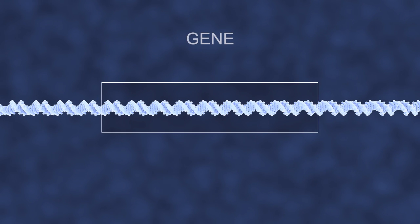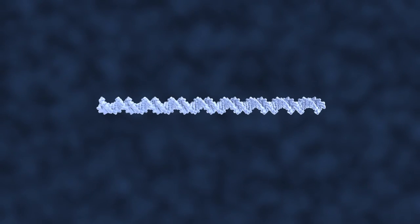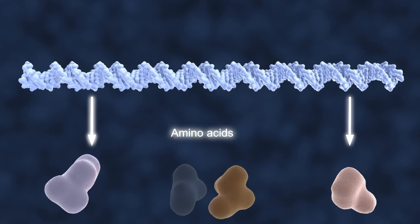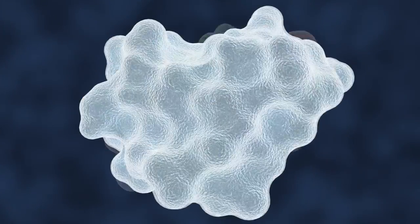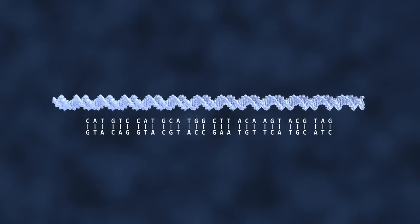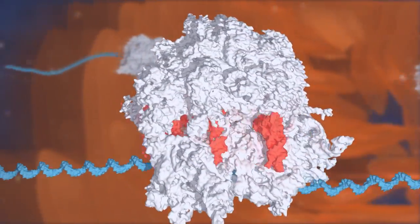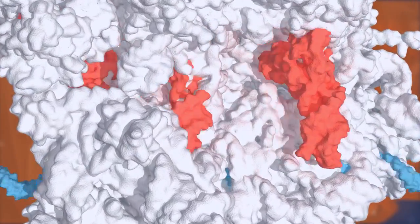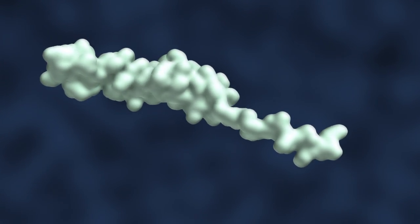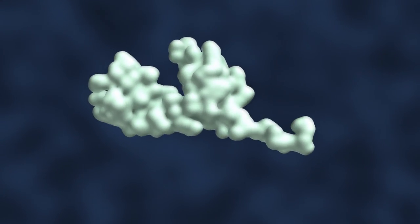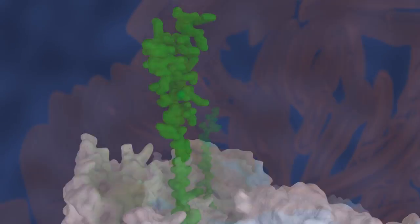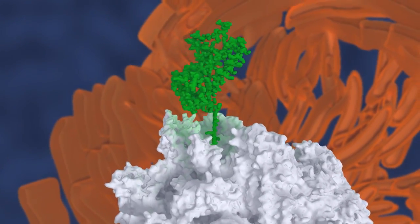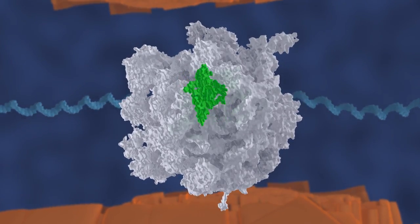Specific sections of DNA, known as genes, provide the code needed to assemble so-called amino acids into proteins. So it is the order of the bases in the gene that is translated into the order of amino acids, which is different for each protein. The amino acids that are assembled into a protein have the characteristic of either attracting or repelling one another, depending on their type.